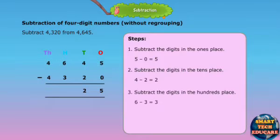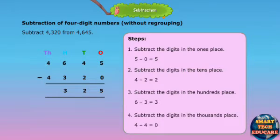Subtract the digits in the hundreds place. 6 minus 3 is equal to 3. Subtract the digits in the thousands place. 4 minus 4 is equal to 0.